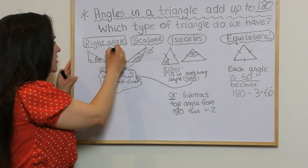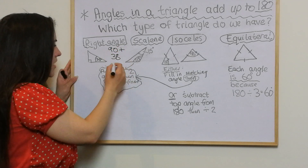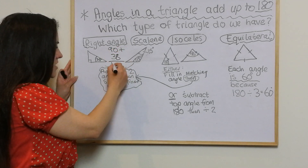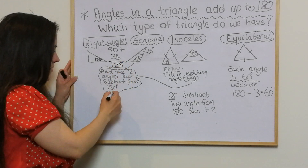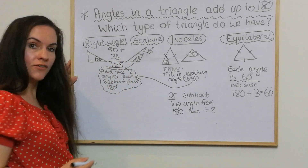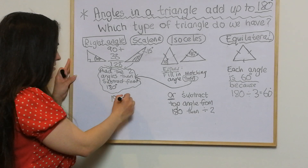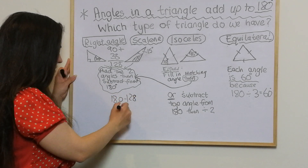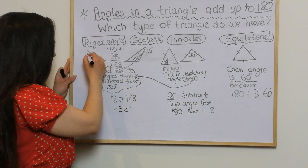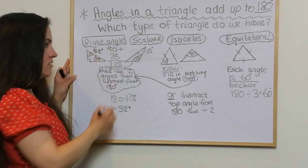So that's 90 and that's 38, so I need to do 90 plus 38, which gives me 128. Then I subtract that from 180: 180 take away 128 gives me 52 degrees. So that missing angle is 52 degrees.